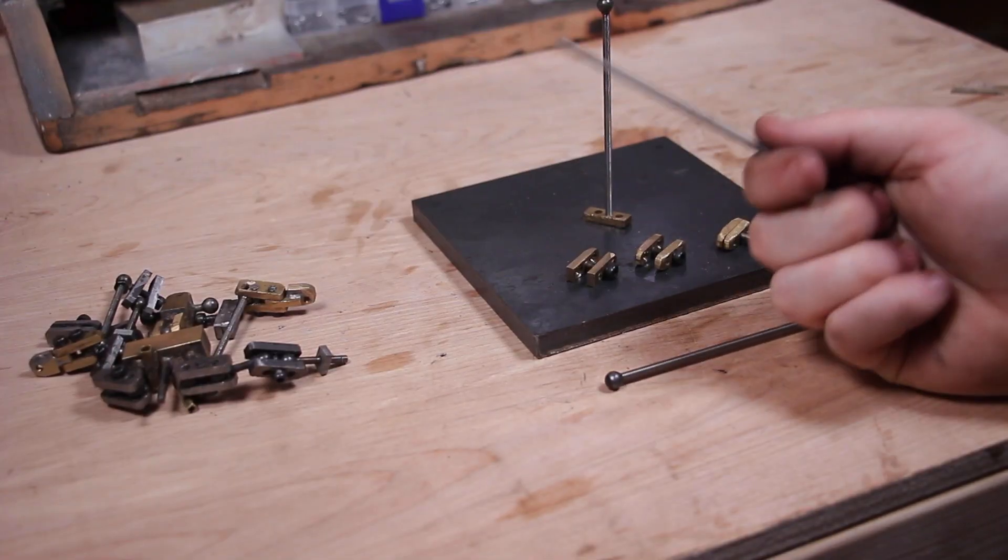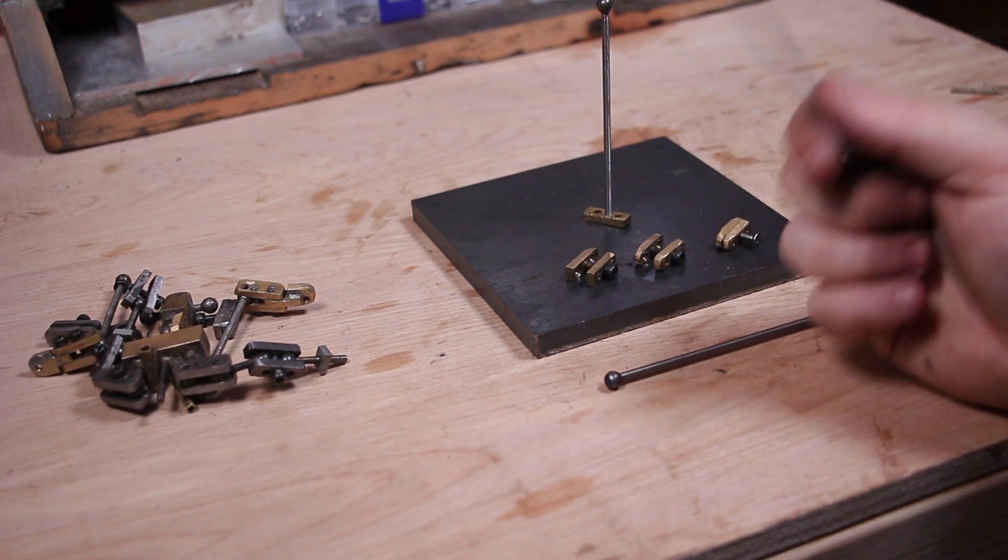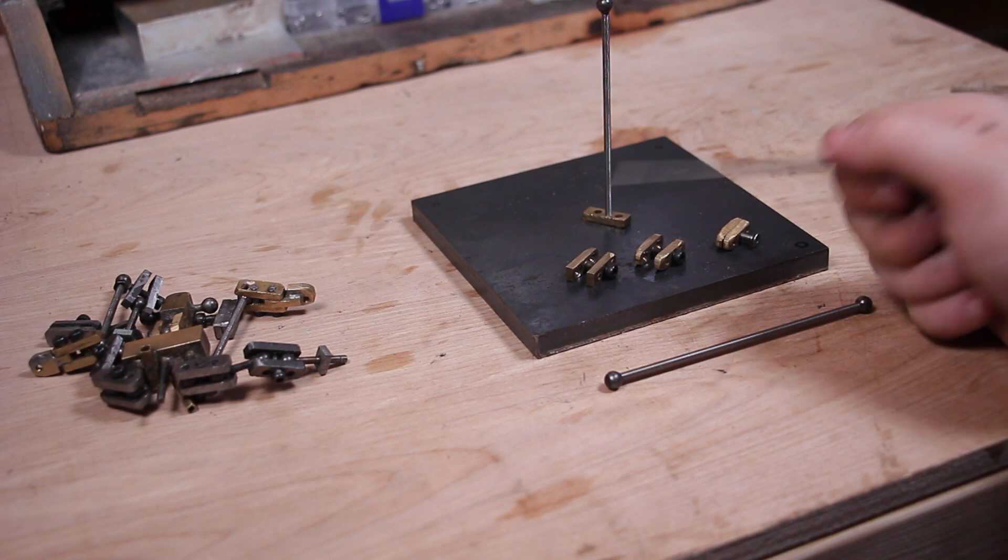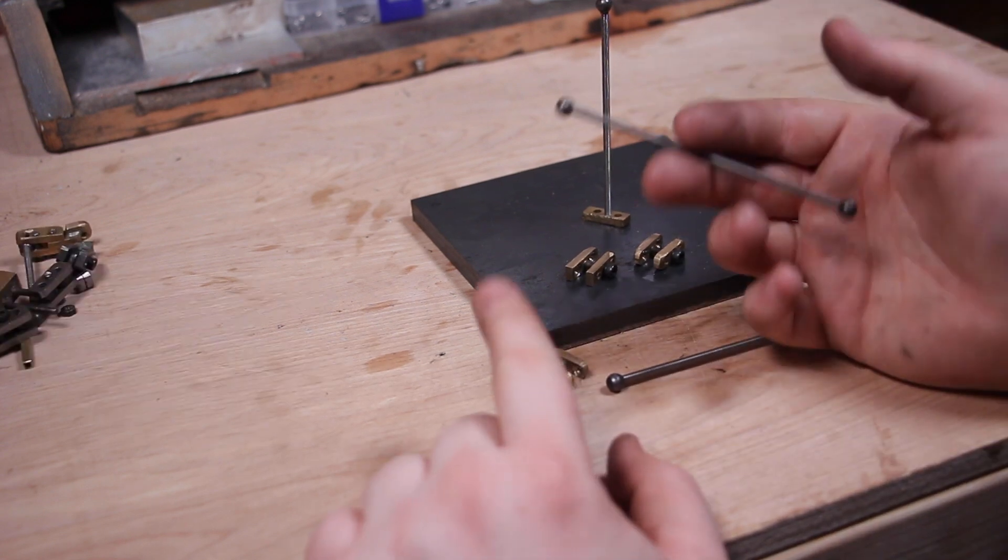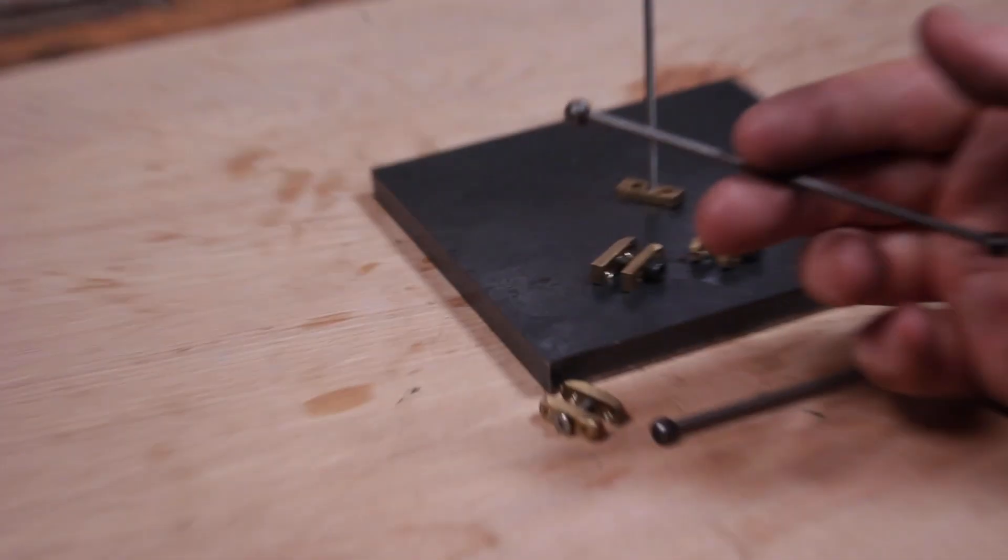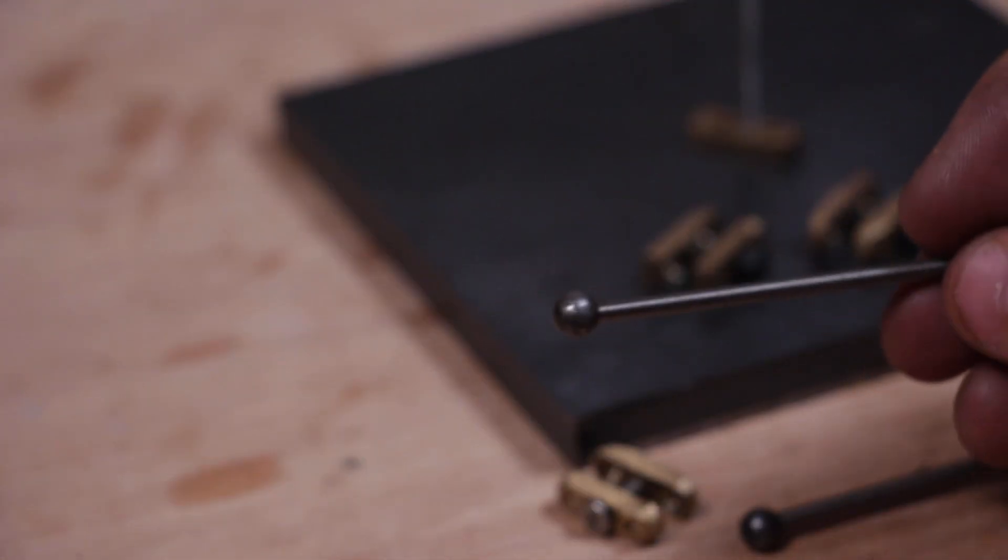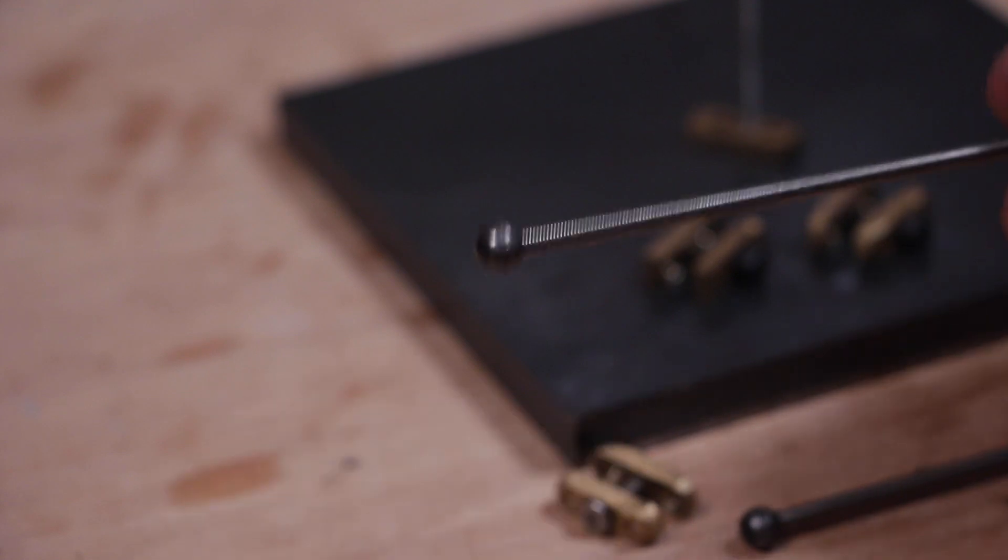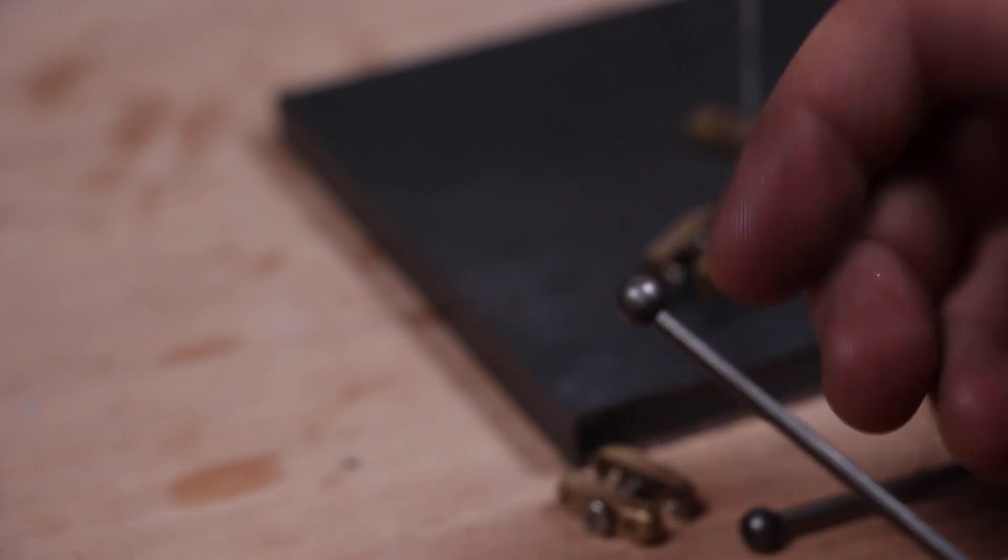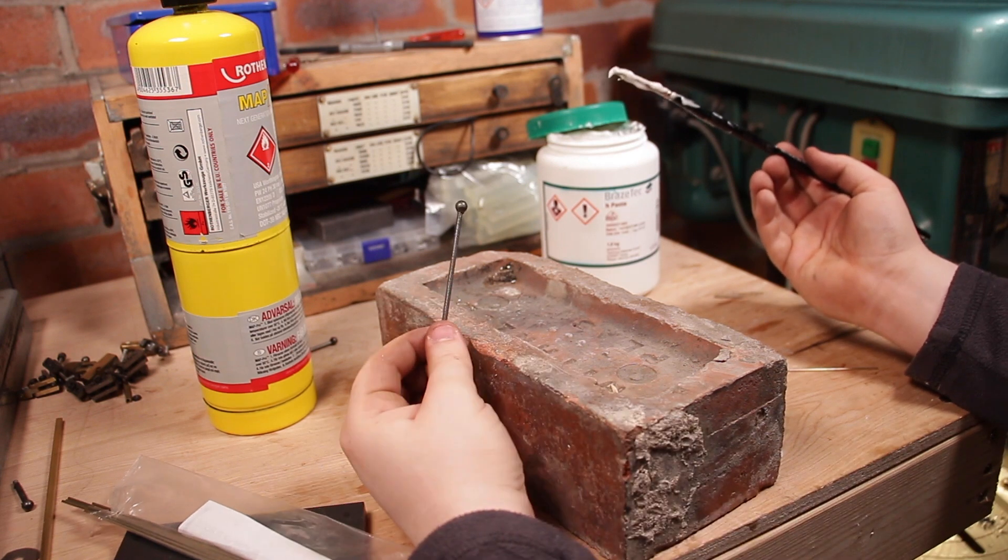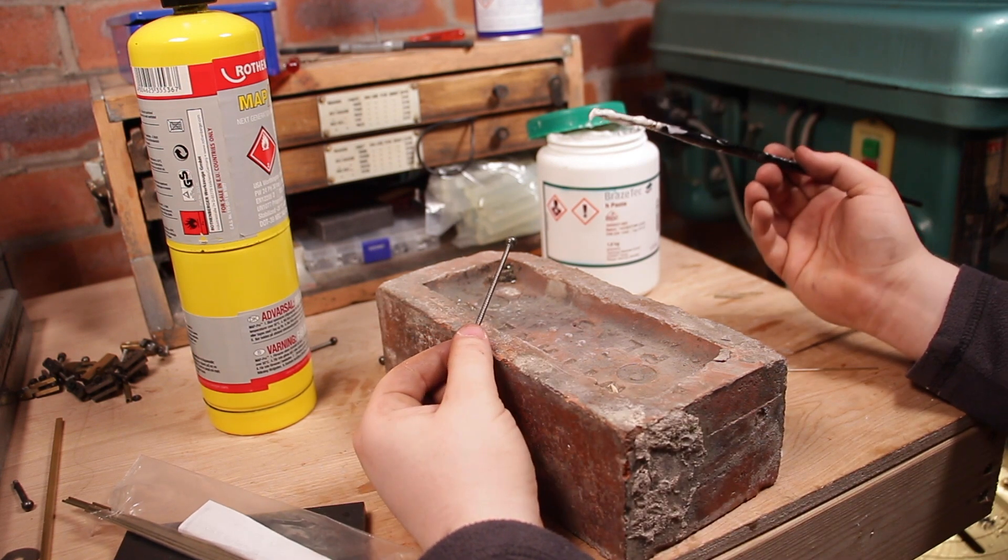So now that we've cut the rods to size, the next step is to attach the ball bearings and the joints together to make the rig. You can see that the ball just threads onto the rod, but the problem is that the thread can come undone.